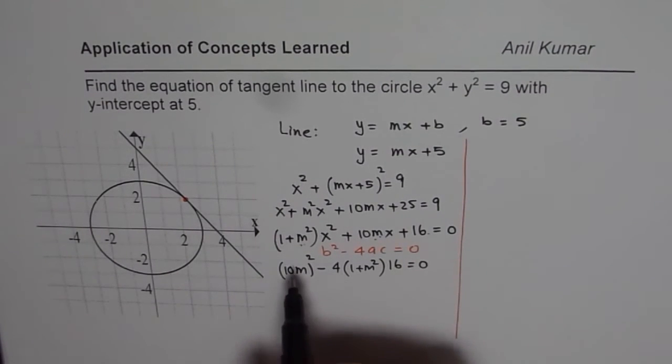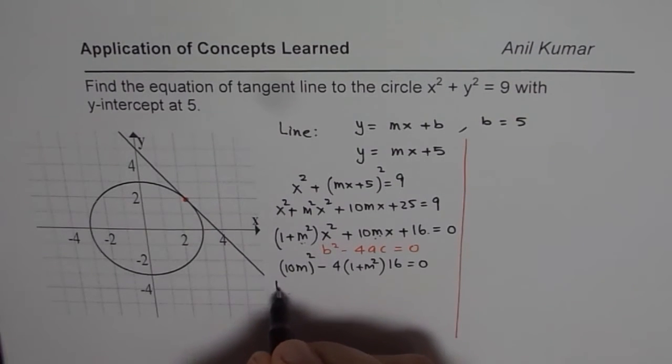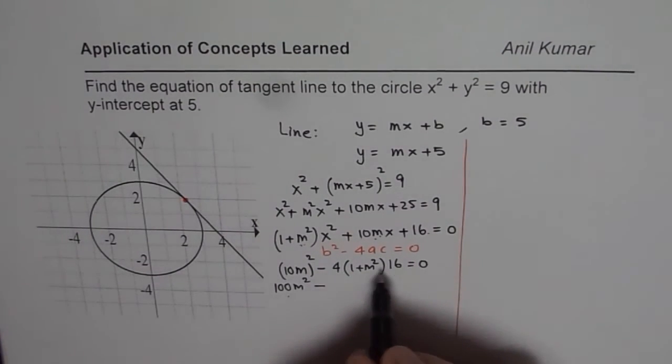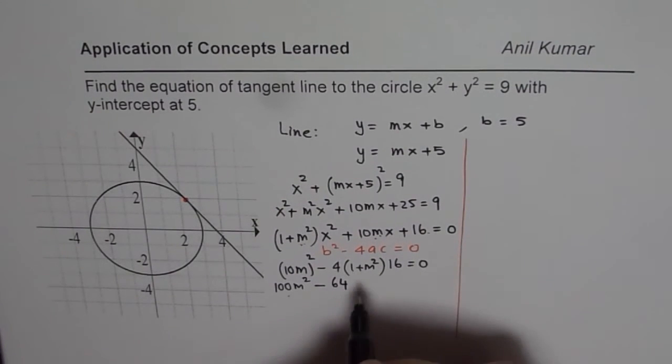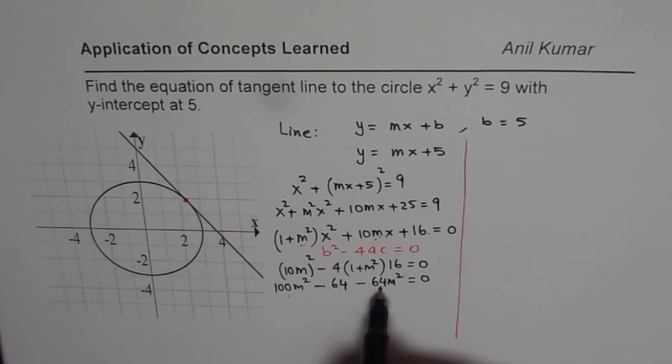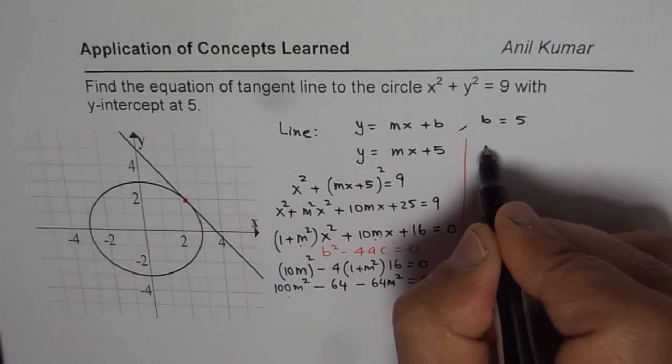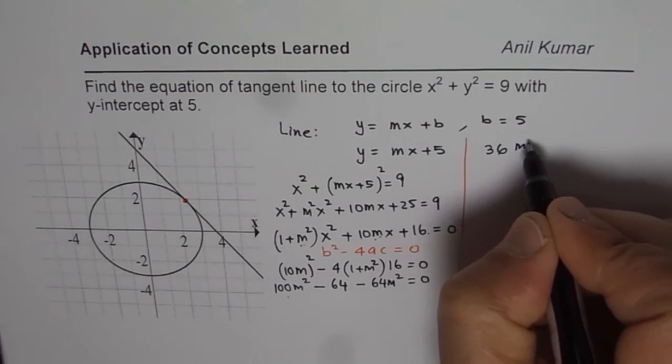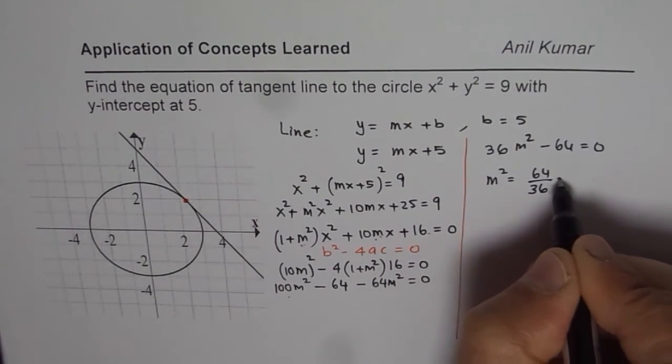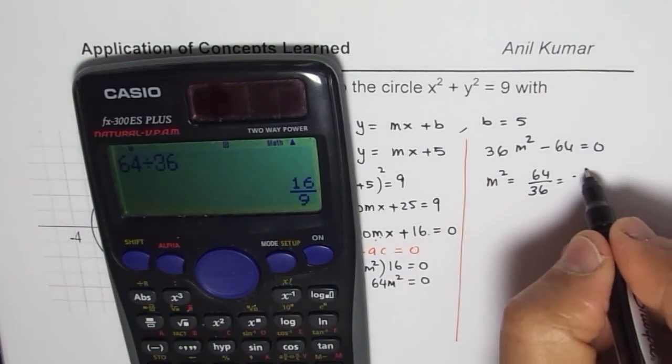So, we have this equation. We can just expand here and then solve for it. So, 10 times 10 is 100. So, we have 100m square minus 16 times 4 is 64. We have 64 here and then we have minus 64m square equals to 0. That becomes the equation, 100 minus 64, which is 36. So, we have 36m square minus 64 equals to 0. And so, we get m square equals to 64 over 36, which is 16 over 9.